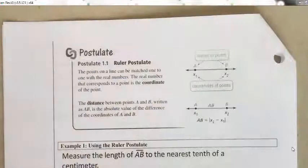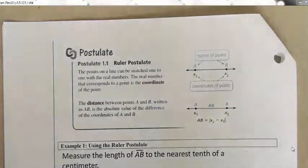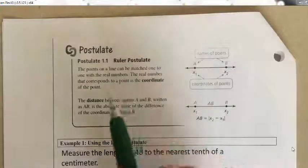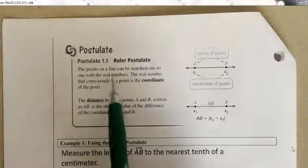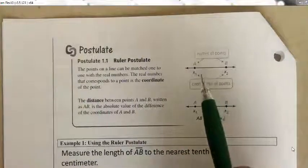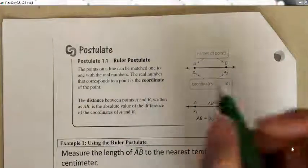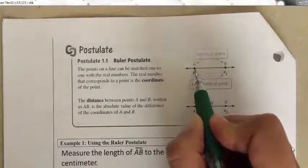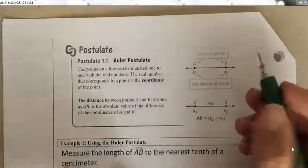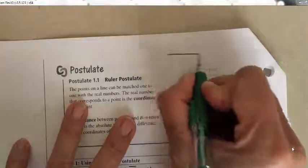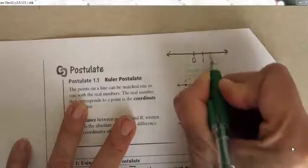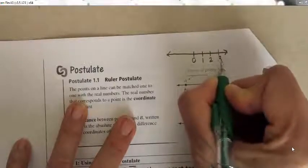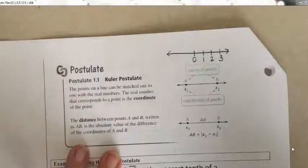Now the Ruler Postulate. This is really not that big of a deal — it's not something you necessarily have to commit to memory. It states that the points on a line can be matched one-to-one with real numbers. Basically, there is some coordinate on a line that can be matched with some number, just like a number line.